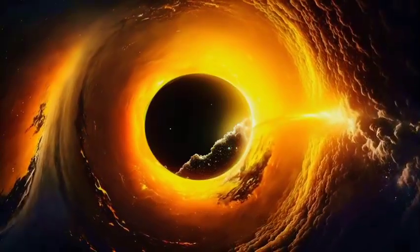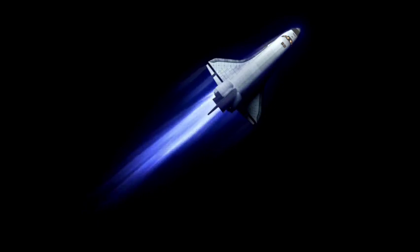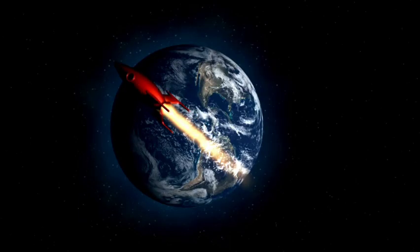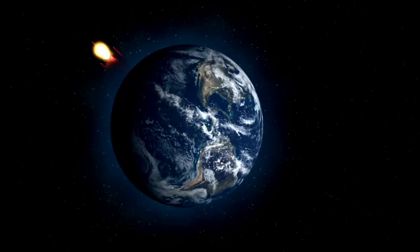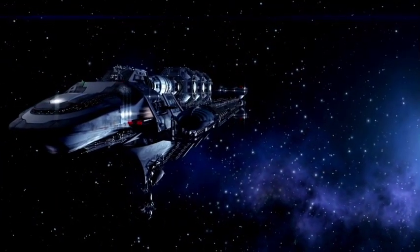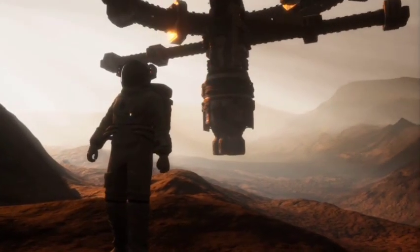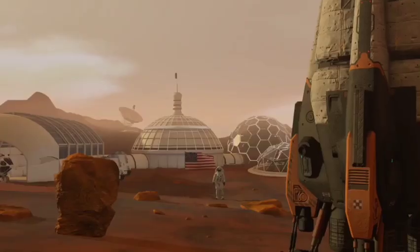Researchers are also studying moons around exoplanets, which add another layer of intrigue. Moons located within the habitable zones of their parent planets could potentially support life, especially if they are geologically active and possess subsurface oceans. Moons such as Europa orbiting Jupiter and Enceladus orbiting Saturn have already been identified as promising candidates for microbial life in our own solar system.